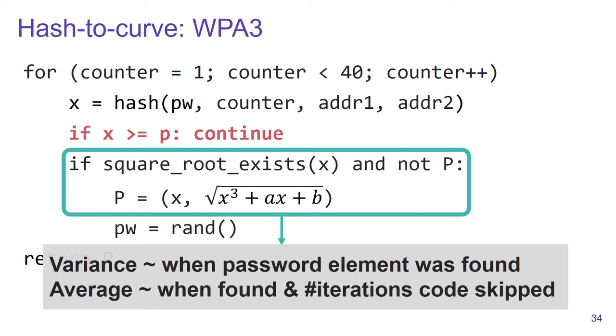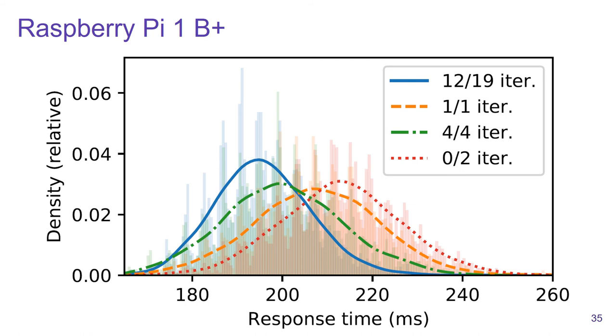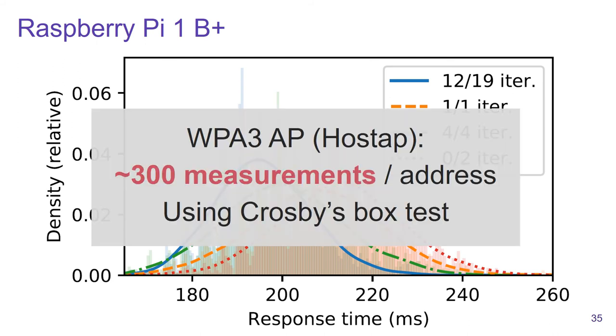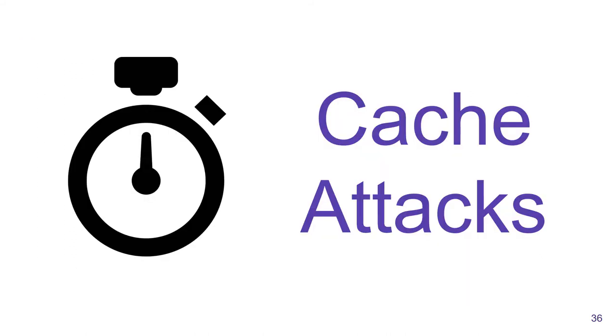So now the question is, can we measure these things in practice? We again performed an experiment against a Raspberry Pi that was running an open source implementation of WPA3. In this case, we had to make more timing measurements. We had to make 300 timing measurements. But when making these measurements, we again were able to obtain enough information to perform an offline dictionary attack.